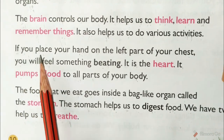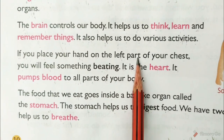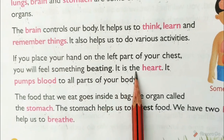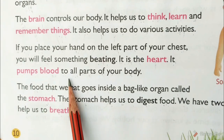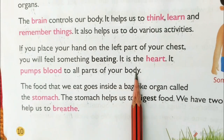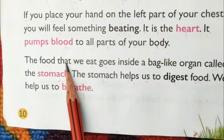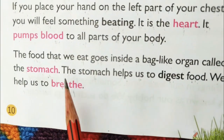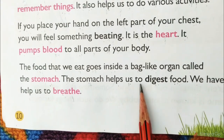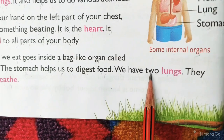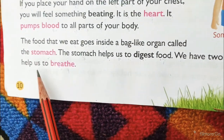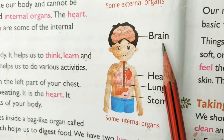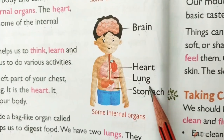If you place your hand on the left part of your chest, you will feel something beating. It is the heart. It pumps blood to all parts of our body. The food that we eat goes inside a bag-like organ called the stomach. The stomach helps us to digest food. We have two lungs. They help us to breathe. Children, these are our internal organs: brain, heart, lungs, stomach.